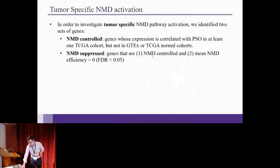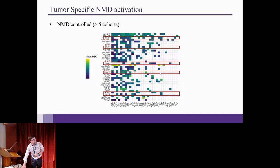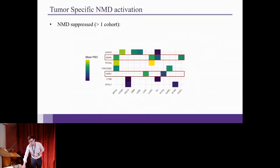So last thing I want to say is that we found tumor-specific NMD. And tumor-specific NMD is basically these genes where the expression is correlated with PSO in TCGA but not in GTEx. And the basic idea here is just that we found a bunch of NMD-controlled genes. And some of them are really important in cancer. We found some in EGFR. We found a bunch of other interesting genes. And if you look at the NMD-controlled genes, there's a bunch of them in many different cohorts. And also, these are the NMD-suppressed genes. The NMD-suppressed genes are both NMD-controlled, and they have NMD efficiency greater than one. And these are sort of the best, most reliable targets that we'll be looking for, maybe for future functional validations.